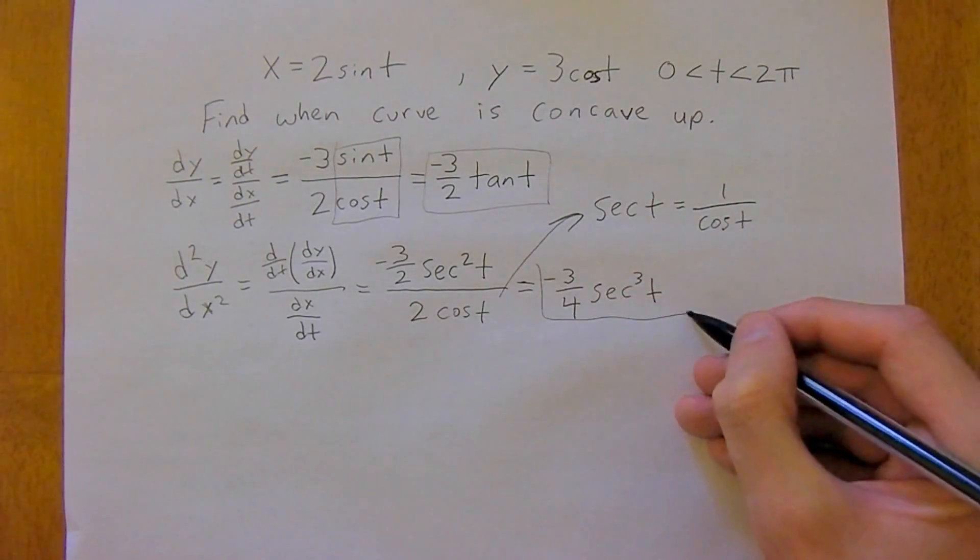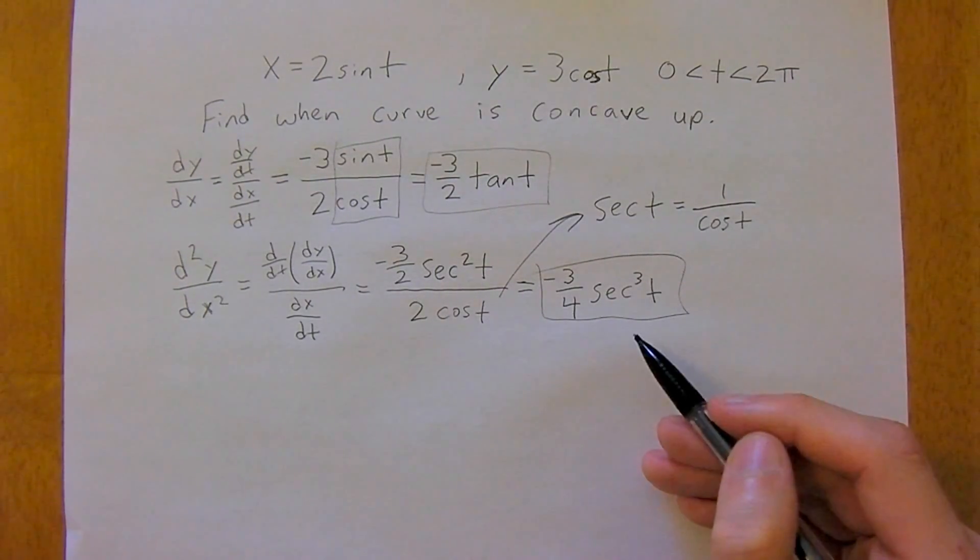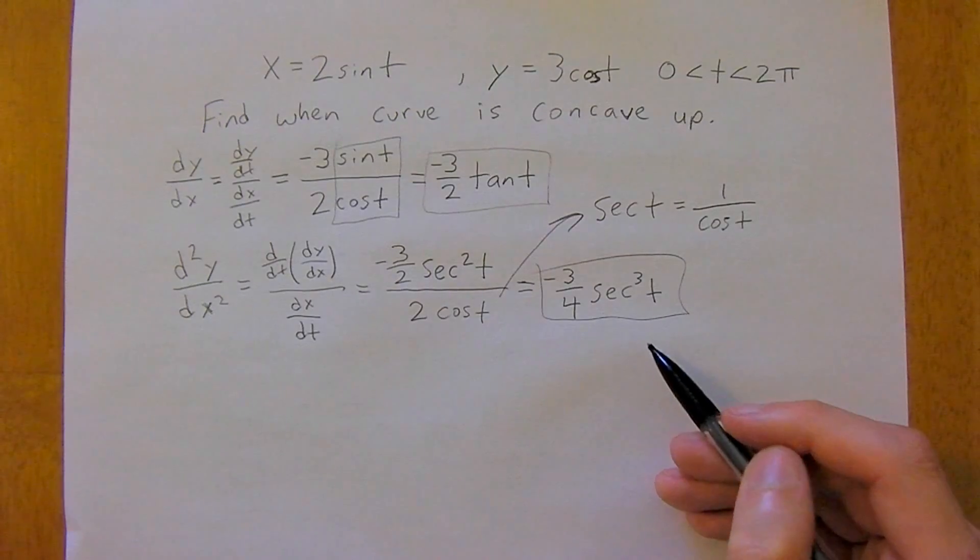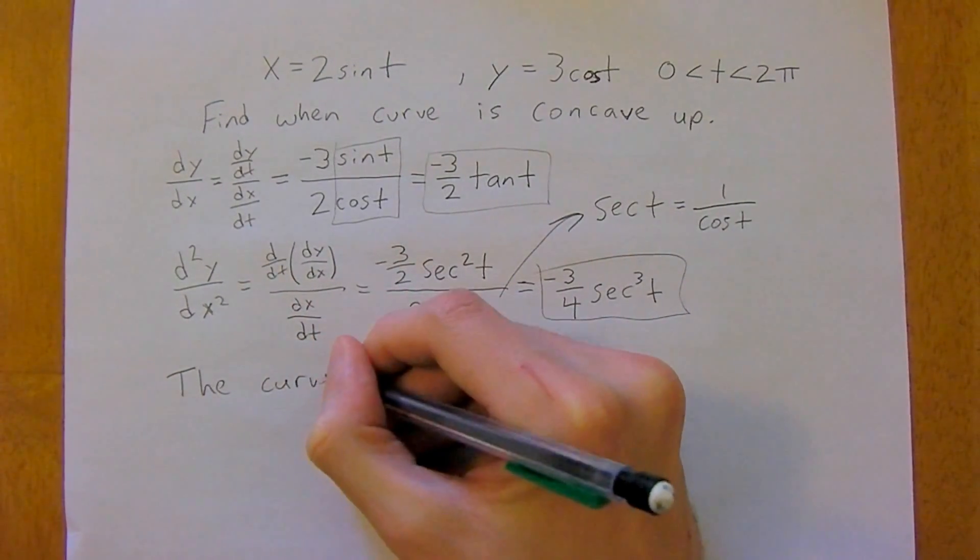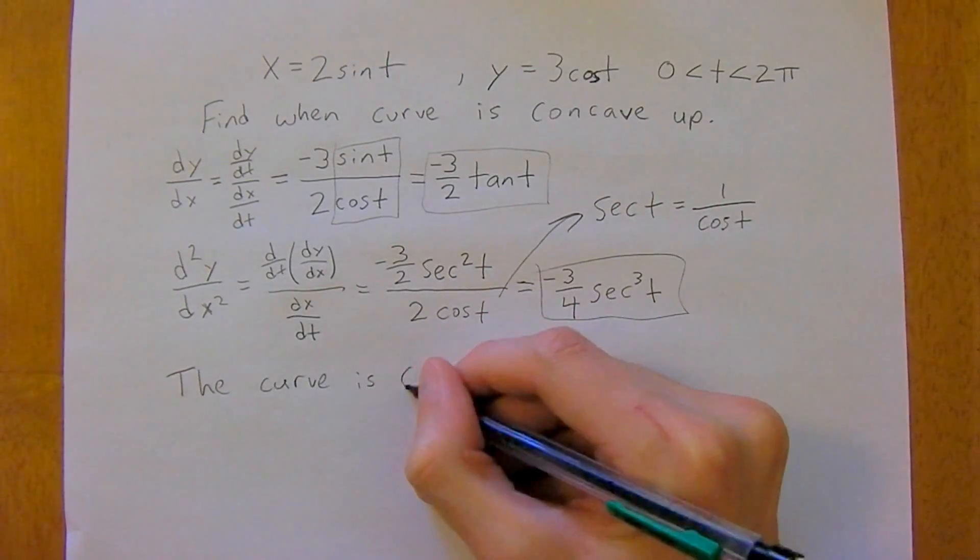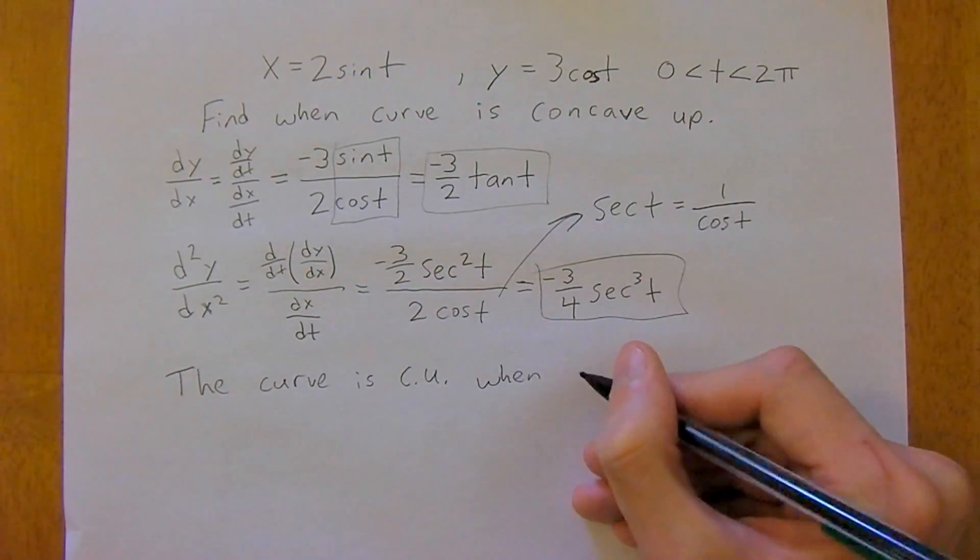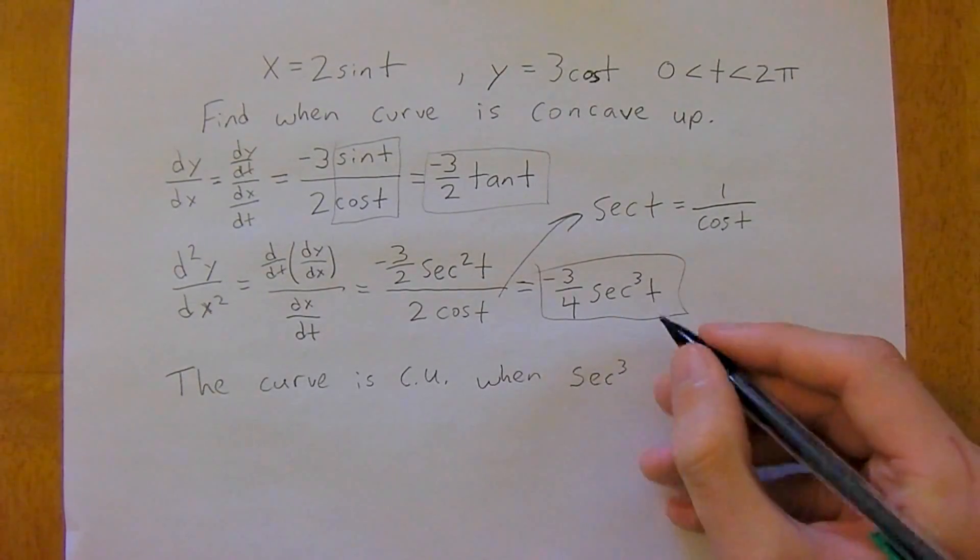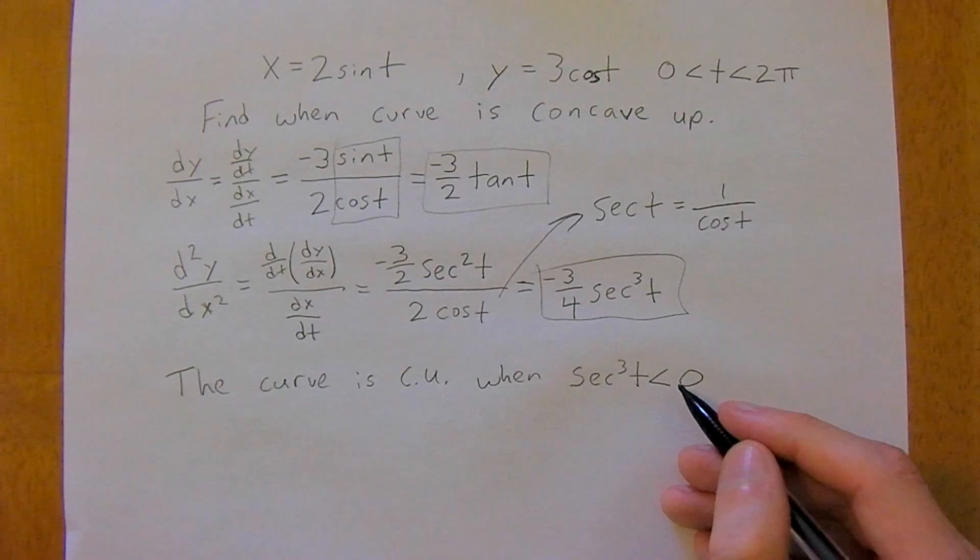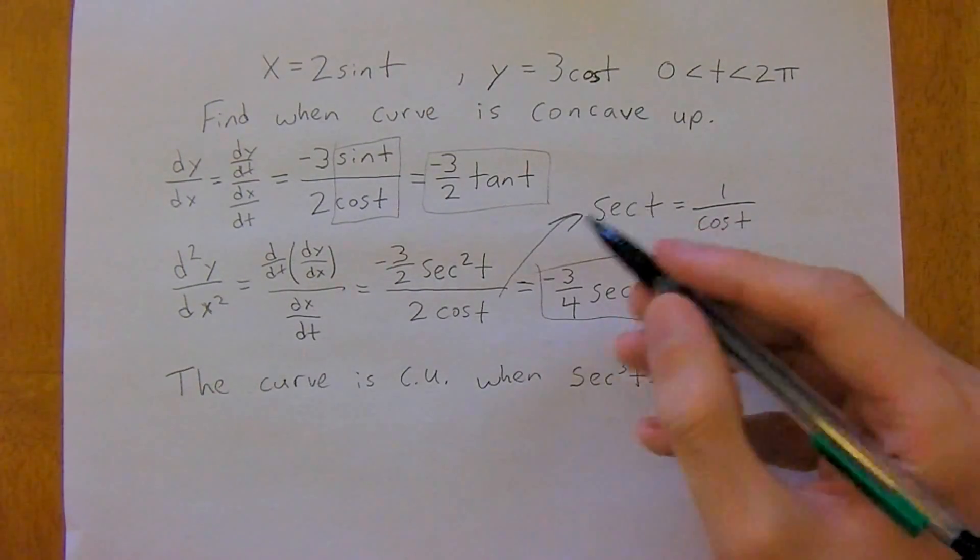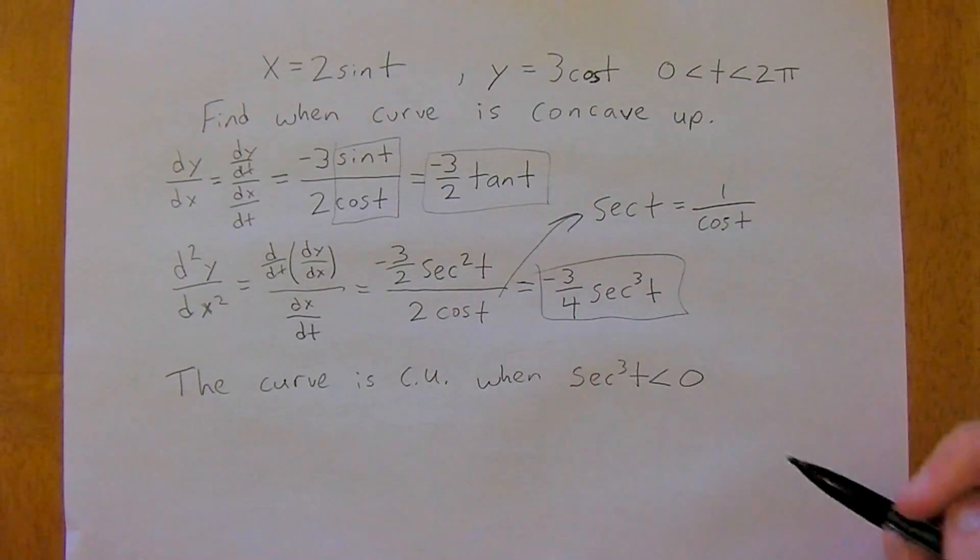So now we just need to, that's your second derivative, so now we just need to figure out at what time this is concave up. And so, the curve is concave up when secant cubed t is less than 0, because we need that case because we have a negative out front here. So we need secant cubed t to be negative to cancel that.